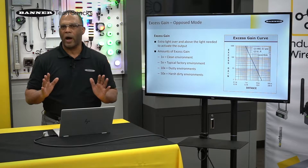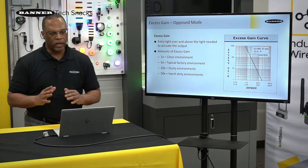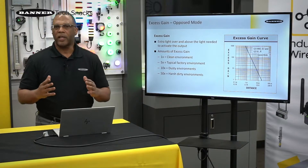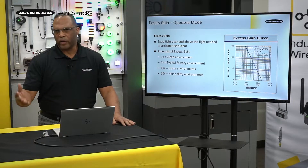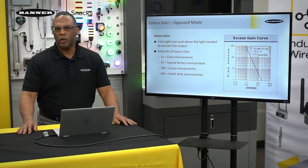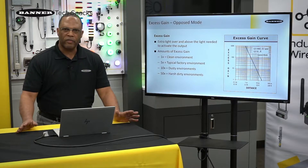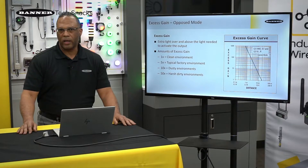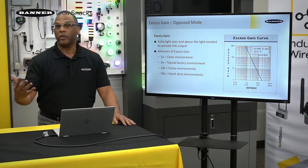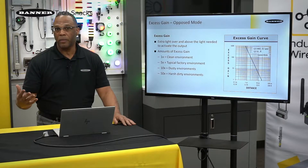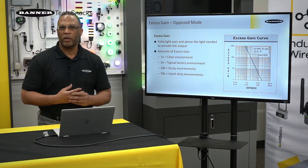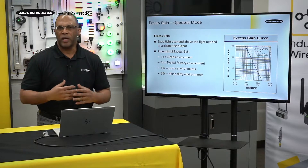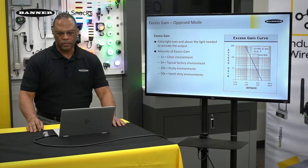That's how a sensor sees a target at one excess gain, so you never really want to operate there. We typically say if you're in a factory environment or warehouse, you want to be at about five excess gain. If you're in a slightly dirty environment, 10. If you're in a very dirty environment, you might want to be at 50 excess gain.